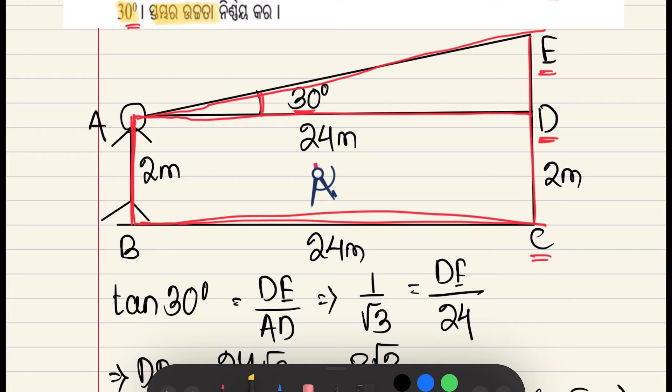This will be in triangle ADE, the in triangle ADE divided by AD. See, BC is 24m, ADB is 24m.